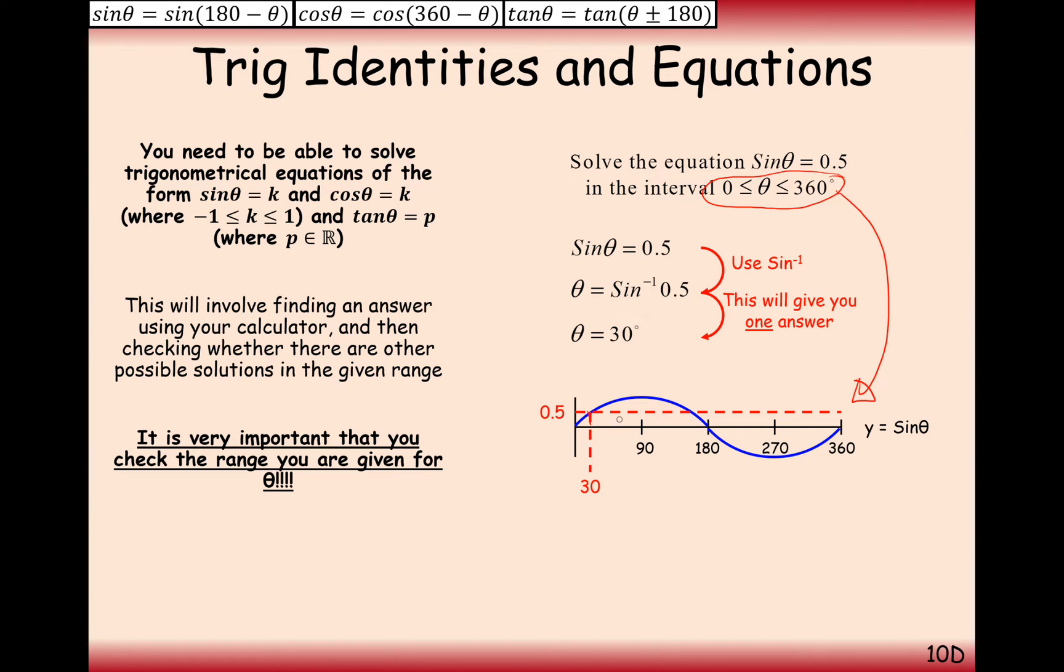And what we're going to use is the symmetry on the sine graph here. So notice how we've gone in 30 degrees here. We're going to go back 30 degrees here to 150 to get that solution there. So we actually get two answers for this question here, 30 degrees and 150 degrees. And when you put both of those numbers into the sine function, you're going to get 0.5 out as your answer. So this is how we're going to do trigonometric equations. It's find all of the answers for theta, such that sine theta equals 0.5.